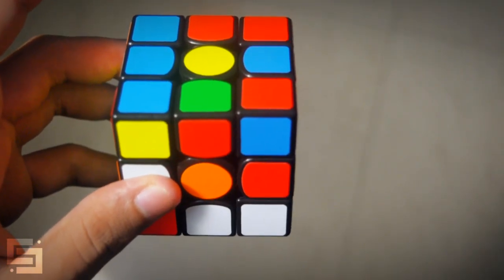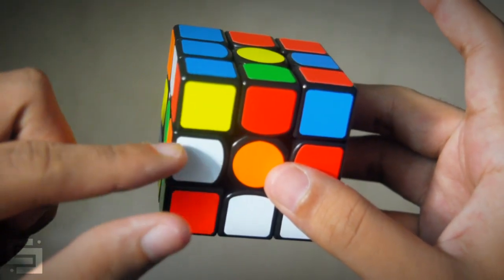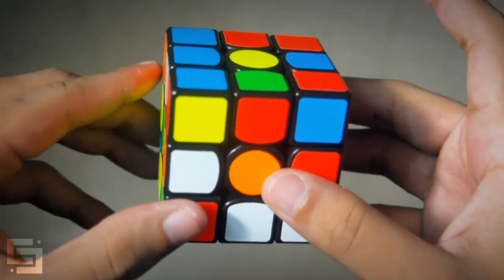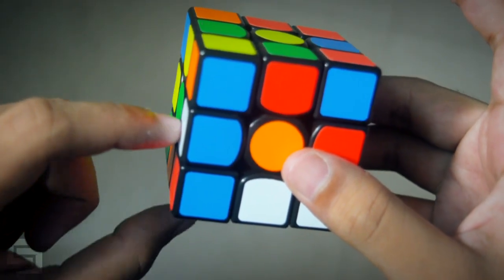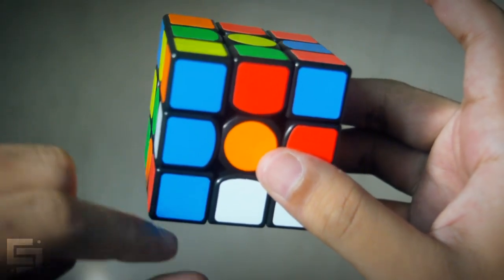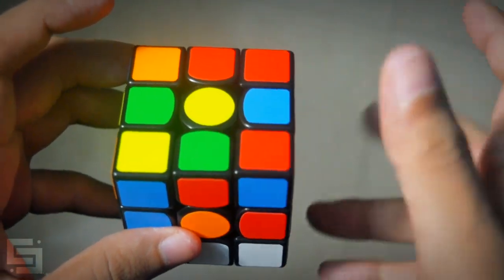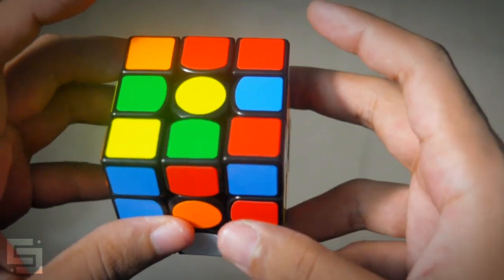For his cross plus first F2L pair, Felix started by putting his orange edge down to the D layer with an L move like that and now we know that we have to do an F move for inserting this blue to the D layer. We also know that this corner and this edge can be paired up with one move like that.